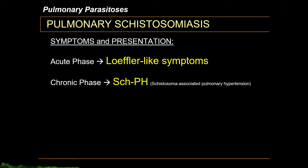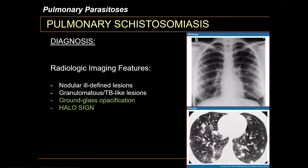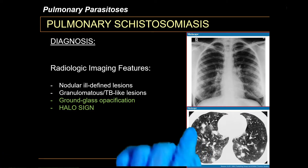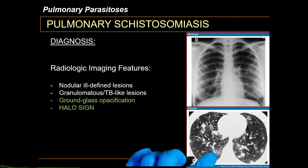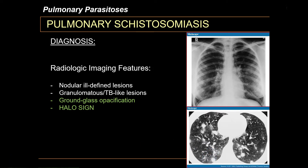The manifestations of schistosoma-associated pulmonary hypertension include dyspnea, chest pain, hypoxemia, and clubbing of the fingernails. Radiologic diagnosis of pulmonary schistosomiasis is possible; you may see ground-glass opacification and the halo sign, which is a series of smaller nodules surrounded by a ground-glass halo. This is thought to be a nonspecific finding related to immune complex deposition or eosinophilic infiltration of the lung parenchyma.